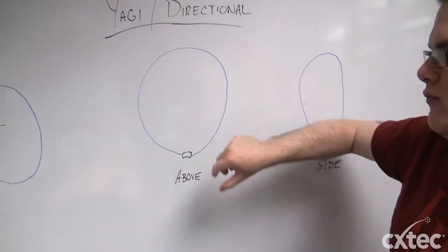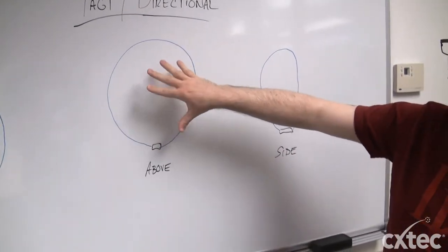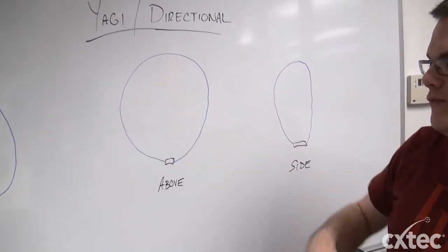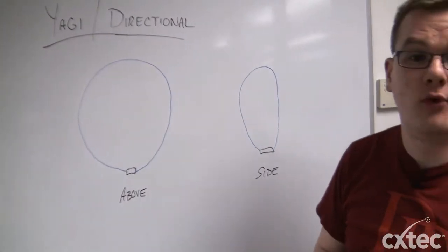And again, that radius or how much of a coverage area that will cover is really based on the antenna and the access point that's involved.